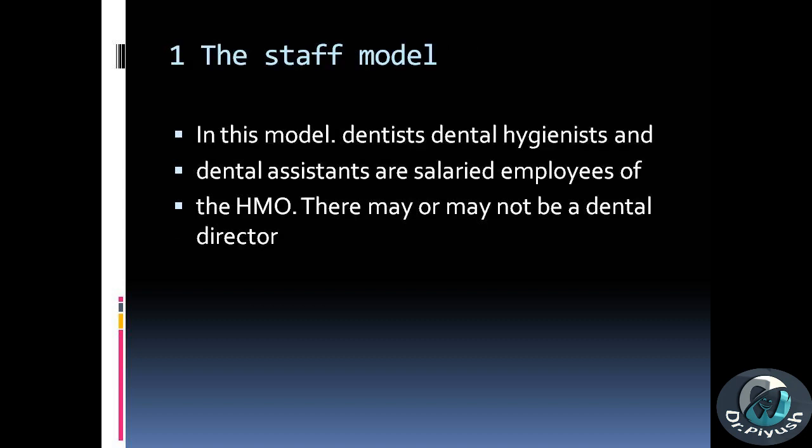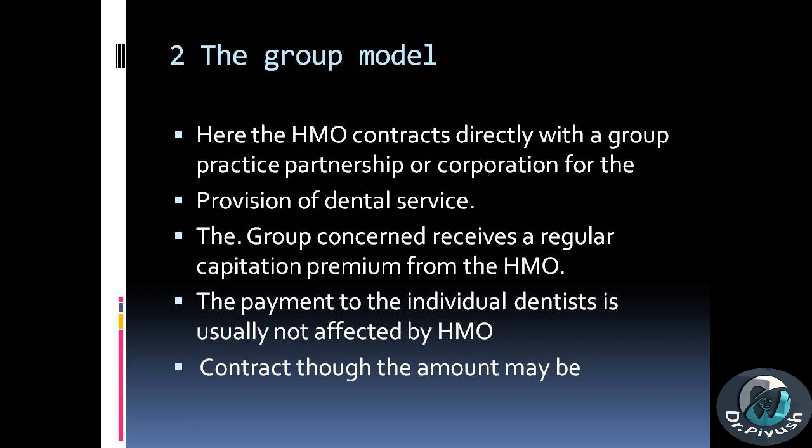The staff model: in this model, dentists, dental hygienists, and dental assistants are salaried employees of the HMO. There may or may not be a dental director. The group model: here the HMO contracts directly with a group practice partnership or corporation for the provision of dental service. The group concerned receives a regular capitation premium from the HMO. The payment to the individual dentists is usually not affected by the HMO contract, though the amount may be.